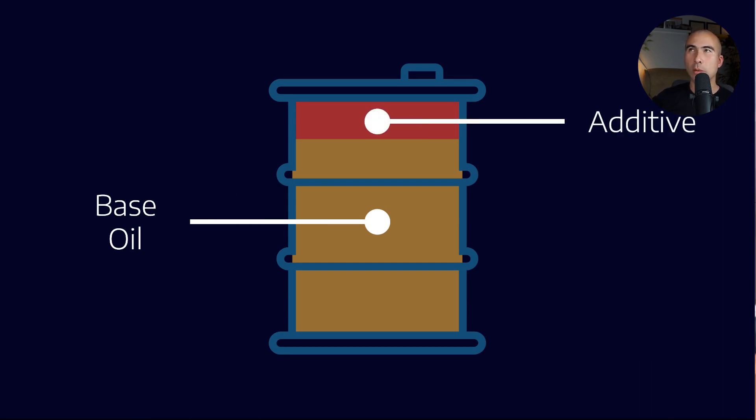Now the base oil tends to comprise anywhere between 80 and call it 100% of the total formulation depending on the kind of oil. So engine oils, a little bit less base oil, something like a compressor oil or even a transformer oil, a lot more base oil.